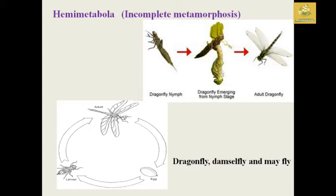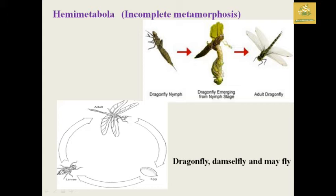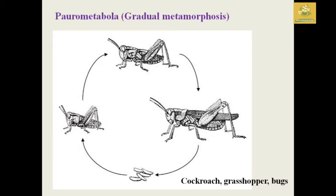Next we are going to see hemimetabola, which is known as incomplete metamorphosis. The dragonfly nymph emerges from the nymph stage to form the adult dragonfly. Examples are dragonfly, damselfly, and mayfly. These are known as hemimetabola, where there is a loss of pupal stage.